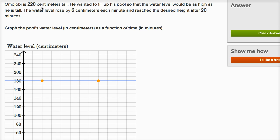Omojobi is 220 centimeters tall. He wanted to fill up his pool so that the water level would be as high as he is tall. So the water level would be 220 centimeters tall. The water level rose by six centimeters each minute and reached the desired height after 20 minutes.